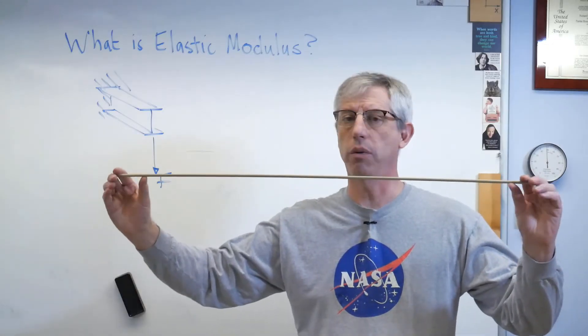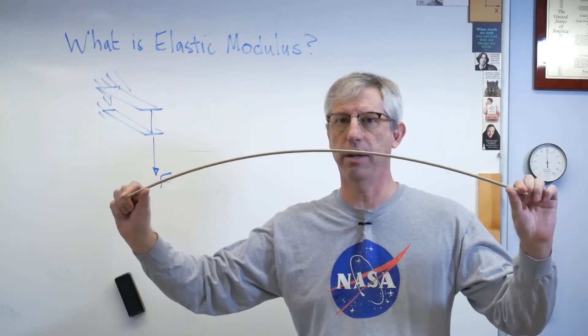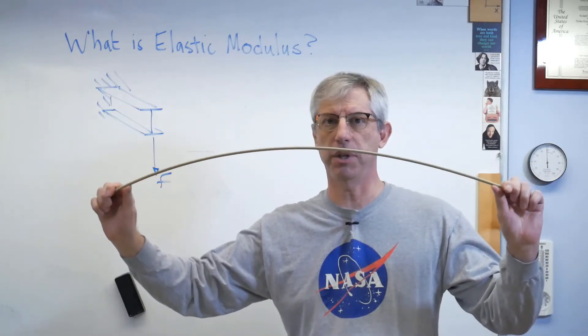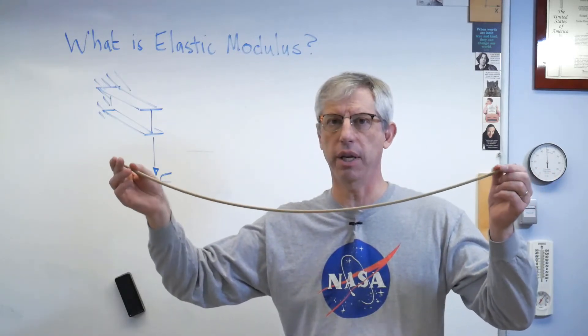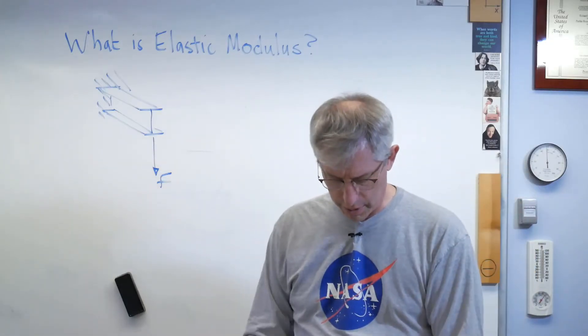Here's the wooden rod. This is poplar wood. And it's super easy to bend. Just with my fingertips, I can bend it very, very easily. This is not very rigid. It's very flexible.